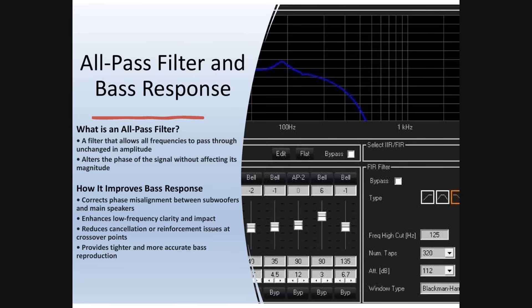All-pass filters correct phase misalignments between subwoofers and main speakers — I used them to integrate my 21-inch subwoofer with the rest of the system. They enhance low-frequency clarity and impact, reduce cancellation and reinforcement issues at crossover points, and provide tighter, more accurate bass reproduction. I'm going to share my screen now to show you measurements in my system and how the all-pass filter helped at specific seat locations.